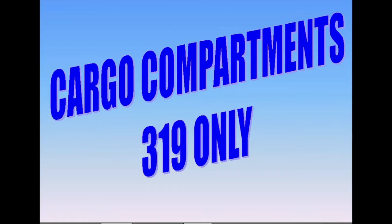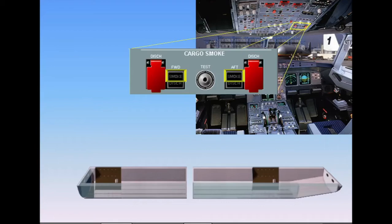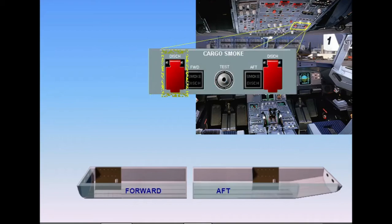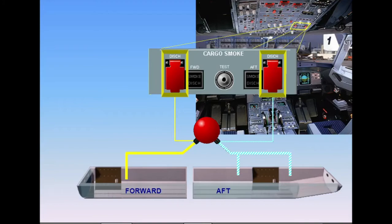The cargo smoke panel on the overhead panel has red smoke indicator lights. There are two guarded discharge switches and one fire bottle. Each switch controls one squib, or discharge head, of the bottle. When pushed, the fire bottle is emptied into the respective compartment. The extinguishing agent is discharged via one nozzle into the forward compartment or two nozzles into the aft compartment.